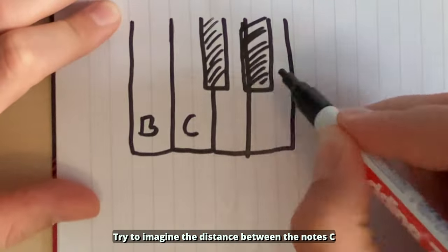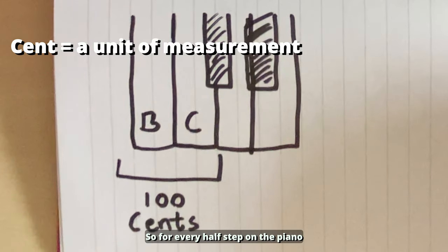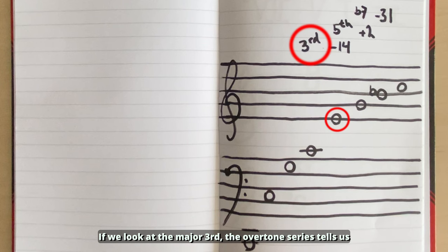Try to imagine the distance between the note C and B natural being 100 cents. So for every half step on the piano, we have to move 100 cents up or down.